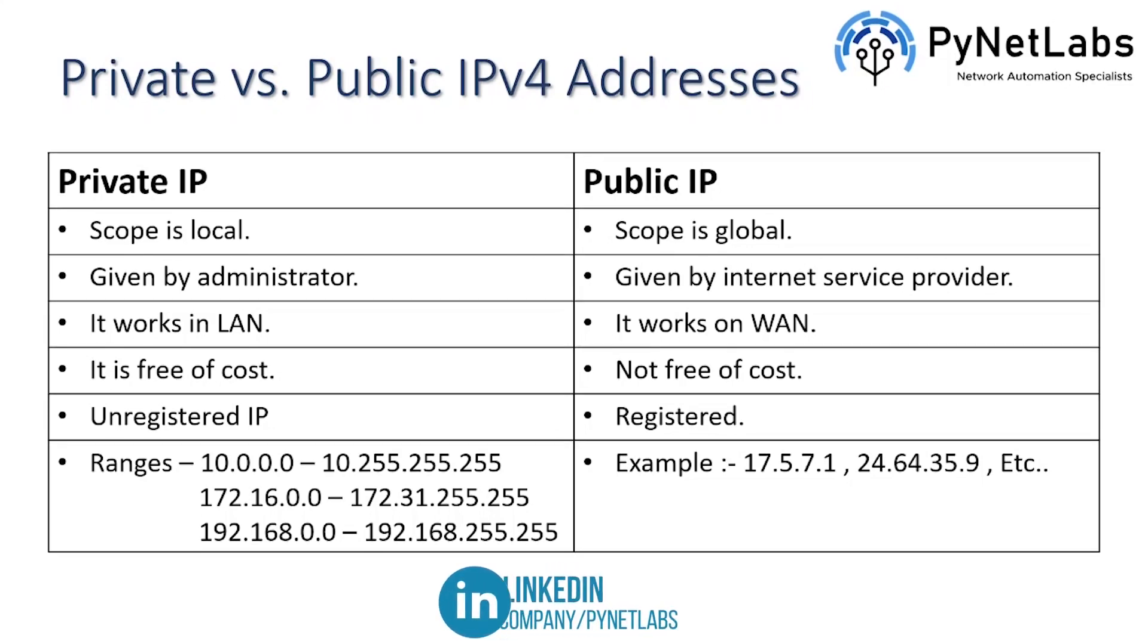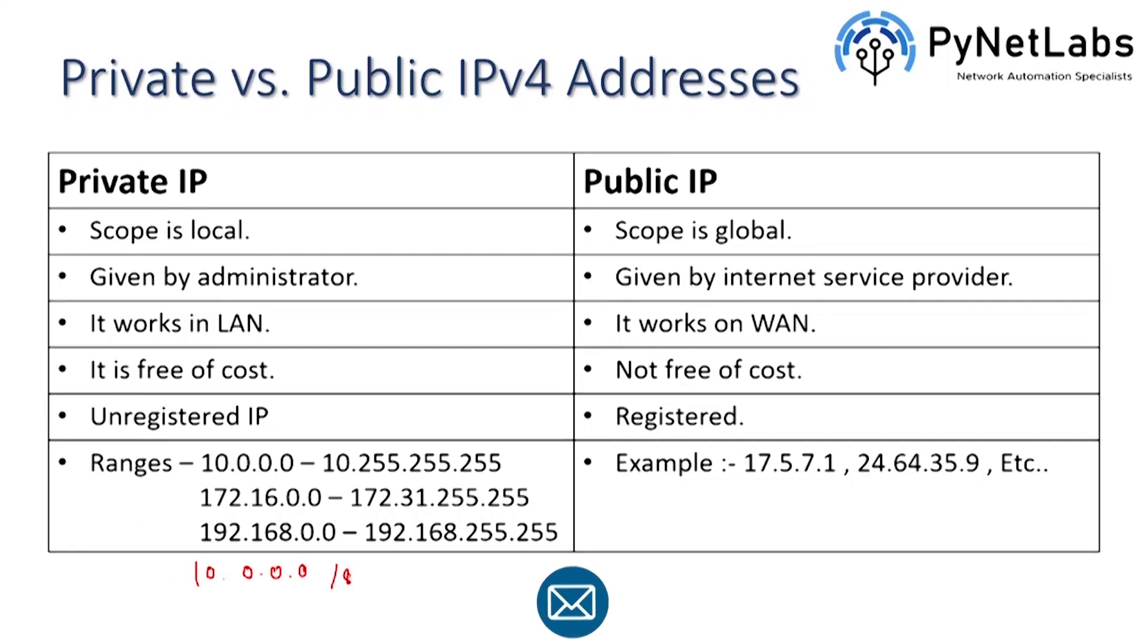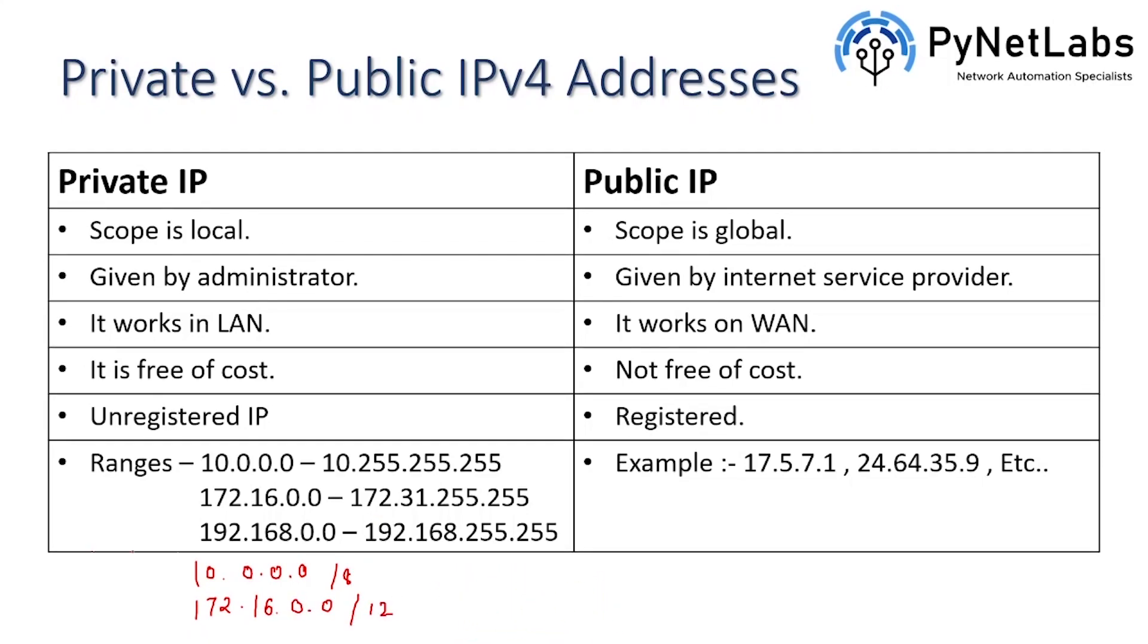Then the ranges for private IP are like these. You have three different ranges. The first range is there for class A, which is from 10.0.0.0 to 10.255.255.255, which is basically 10.0.0.0/8 network. Then you have 172.16.0.0 to 172.31.255.255, which is a network of 172.16.0.0/12. Your class A provides you this range, your class B provides you this range. Then you have another range from class C, which is 192.168.0.0/16. So 192.168.0.0 to 192.168.255.255.